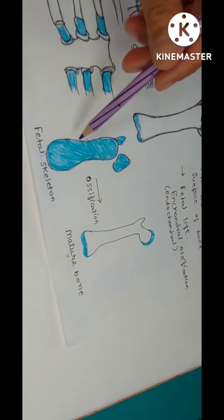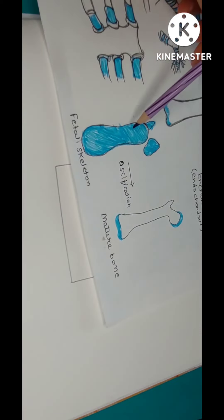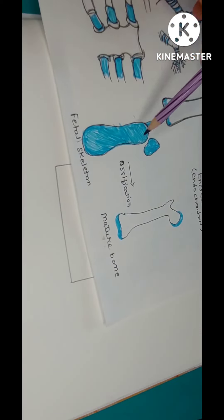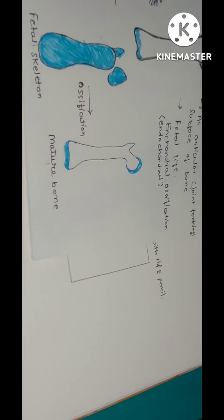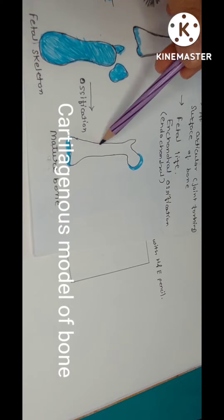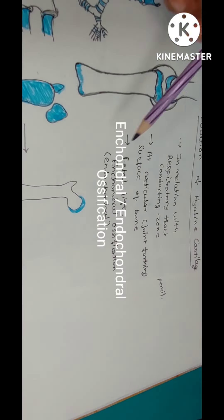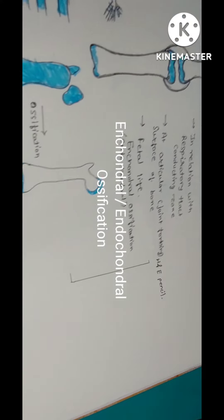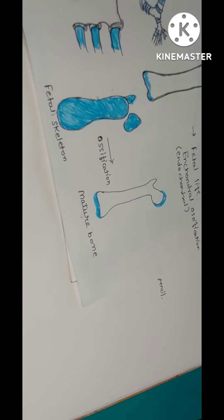In fetal life, the fetal skeleton is composed of this hyaline cartilage, which after ossification forms mature bone. This process is known as endochondral ossification, which takes place in the cartilaginous model of the bone.